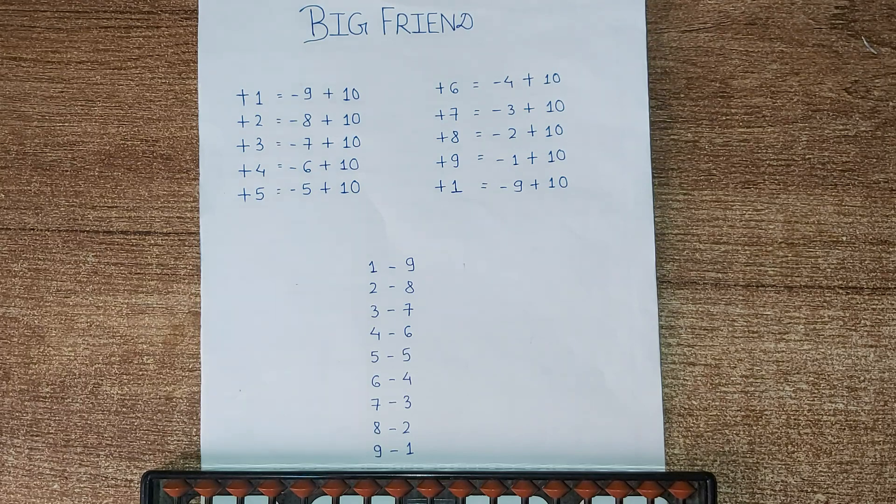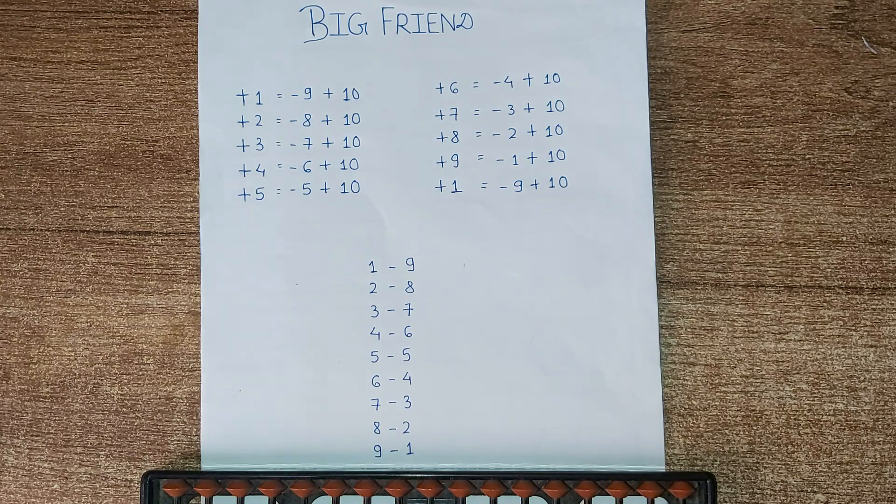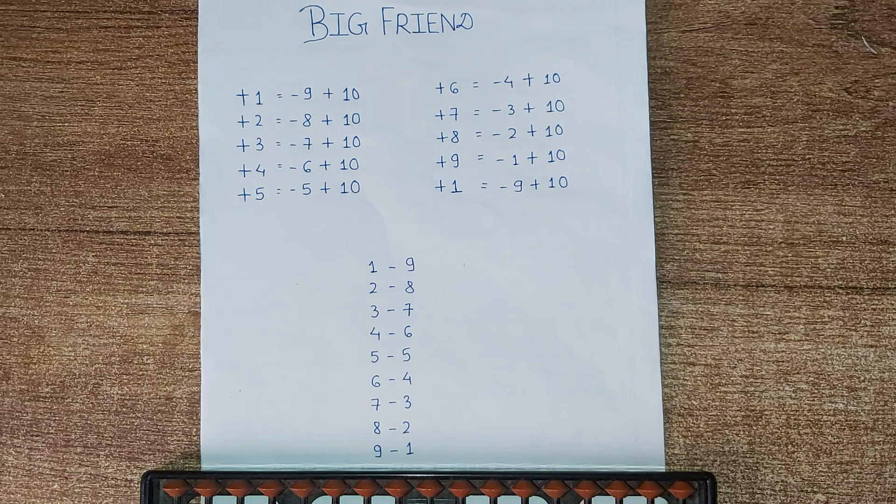The concept of big friend is quite similar to the concept of small friend. In the case of big friend, we take the bead of value 10 as the reference. To obtain the number from addition and subtraction on abacus, we operate the reference 10 with the big friend.